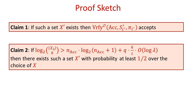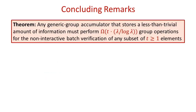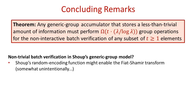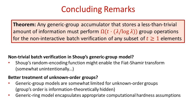To conclude, I would like to mention two directions for future research. The first is examining whether our results can be extended to Shoup's incomparable generic group model. The second is obtaining a better understanding of batch verification in unknown order groups, such as RSA groups — a natural starting point is looking into our approach in the context of the generic ring model, which captures such groups more realistically. Thank you for listening.